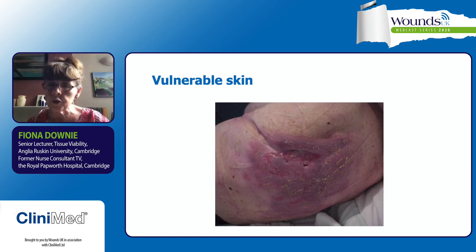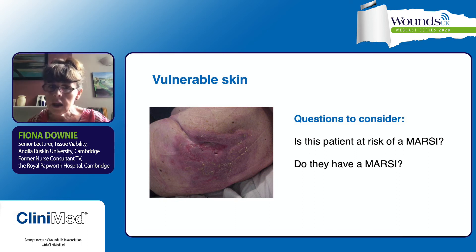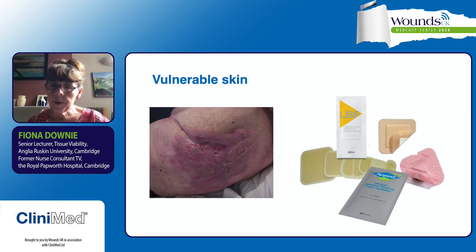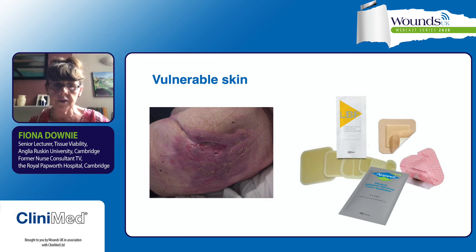This patient has a partial open thoracotomy wound to the left side. Is this patient at risk of a MARSI? The answer is both — they do have a MARSI and they are at risk. We need to think about optimising the skin, considering skin protectors, and choosing an appropriate dressing. If you can use a dressing with a gentle border, it will be much easier to remove, and using a medical adhesive remover will make the whole process much less traumatic.